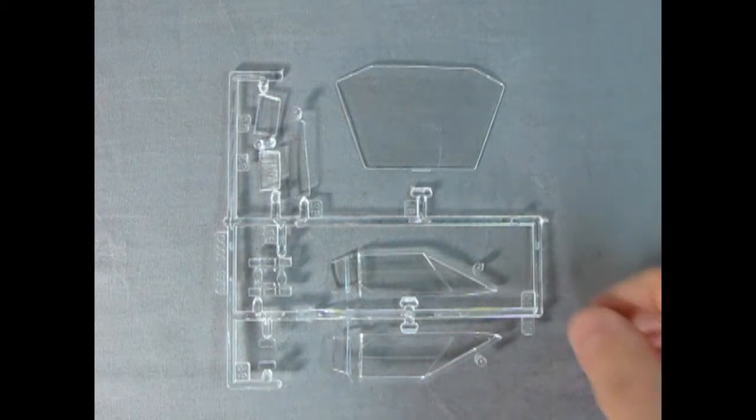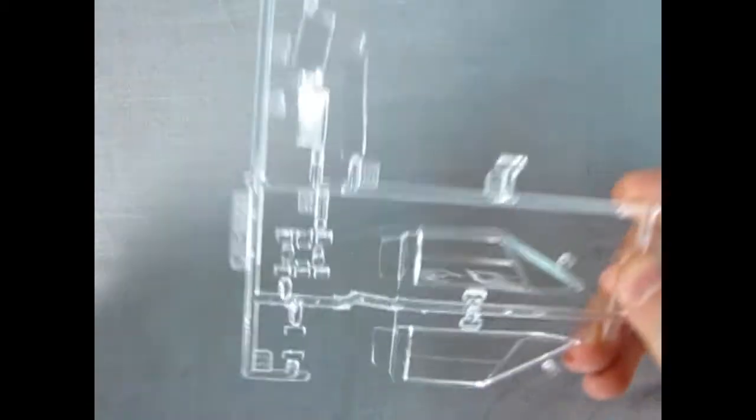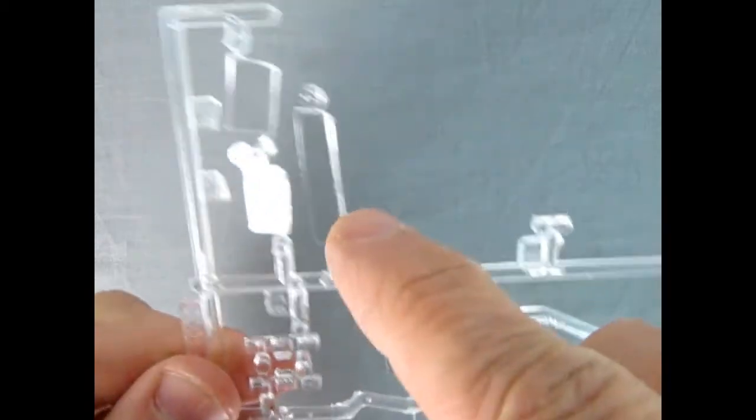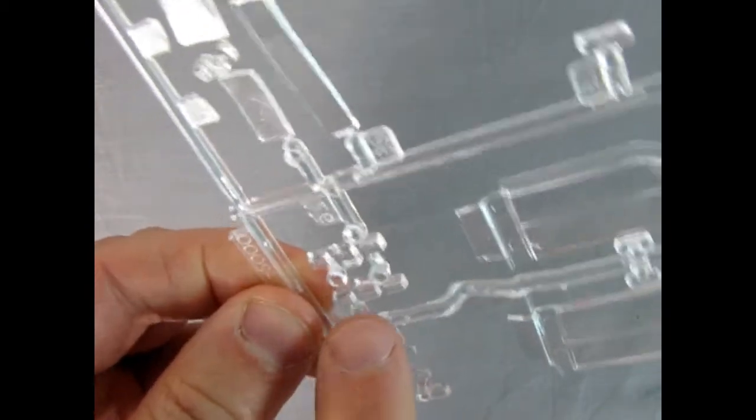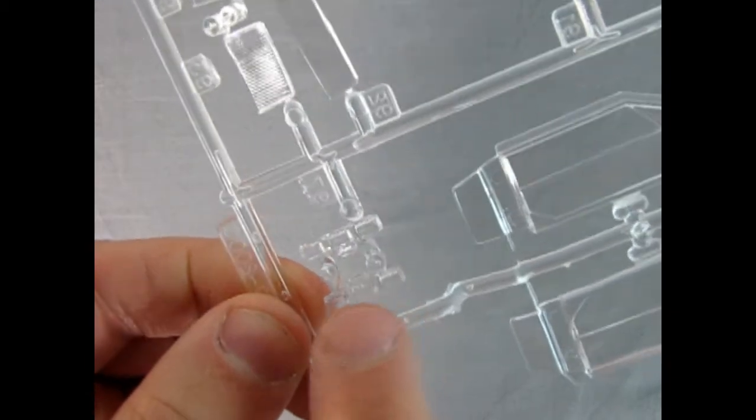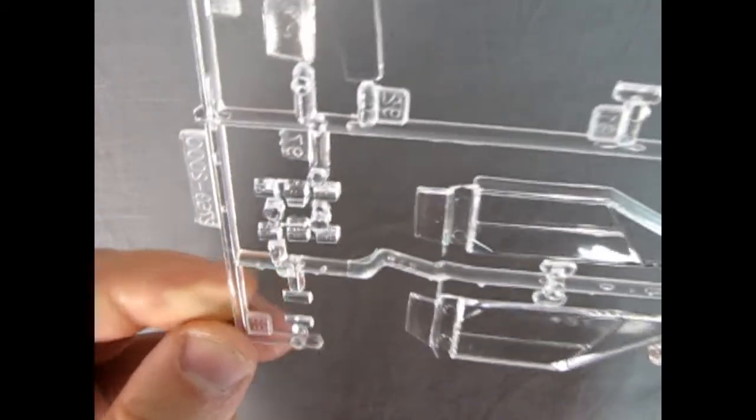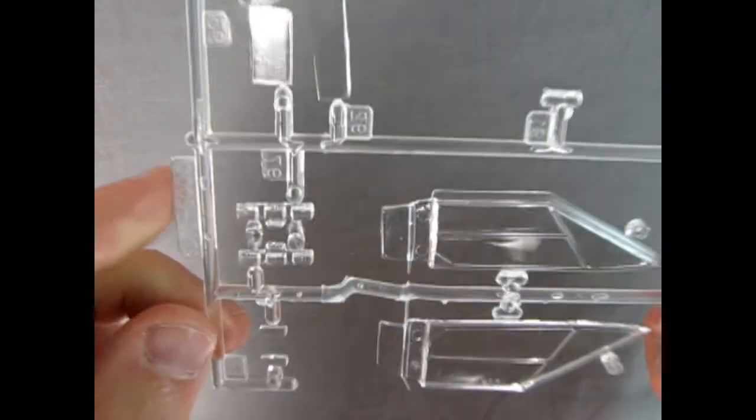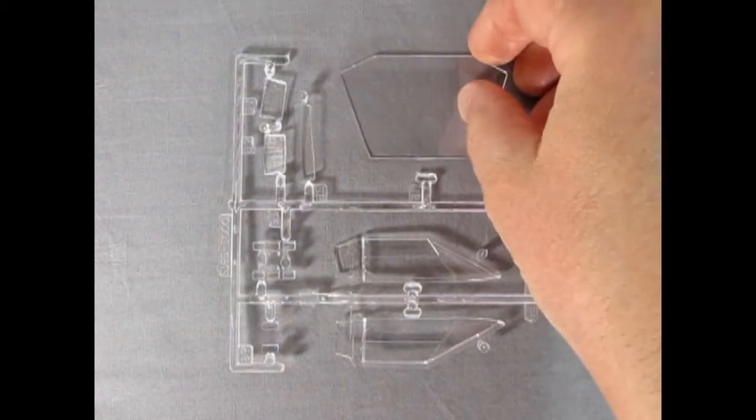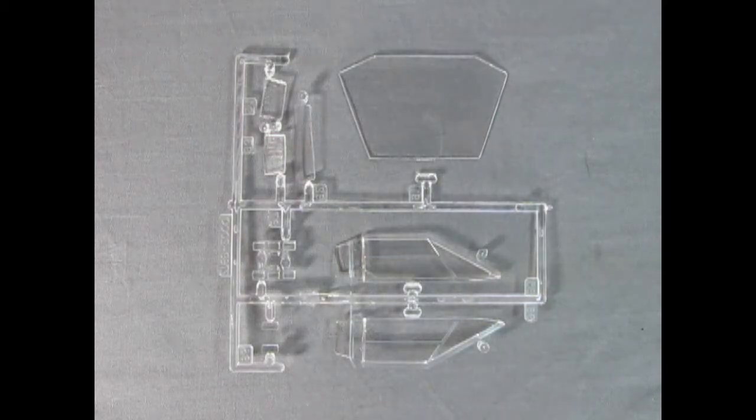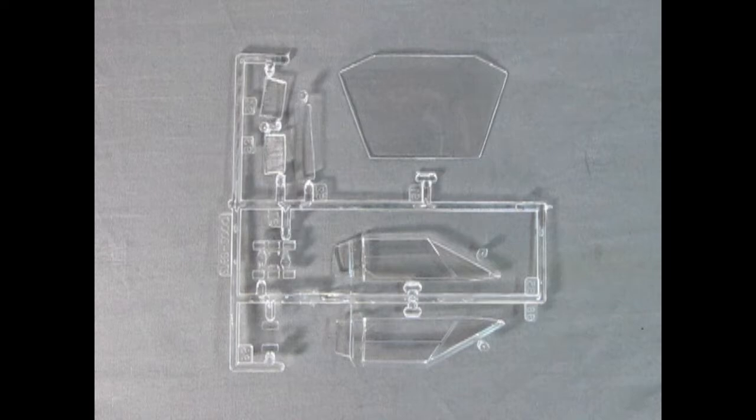Here we have all our clear components. You got that windshield right down there, our side glass, the rear window, and the front headlight covers as well as the rear taillights. Now the rear taillights you're going to have to paint, and even those front turn signal covers. So you'd need a transparent red and a yellow, just to get that all great, something like a Testors turn signal yellow and stoplight red.